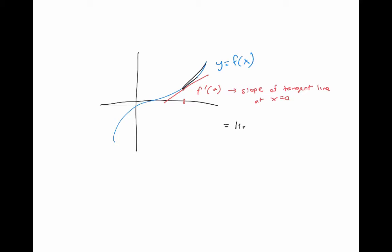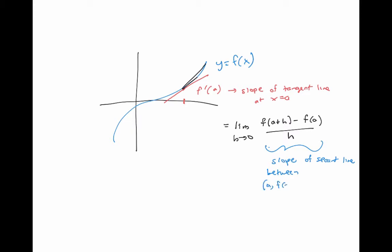Algebraically, we define the derivative as the limit as h goes to zero of f of a plus h minus f of a over h. This ratio represented the slope of the secant line between the points (a, f(a)) and (a+h, f(a+h)). So how can we generalize this process to curves defined in two, three, or even more dimensions by vector-valued functions?